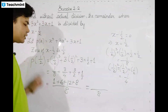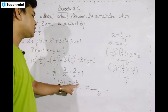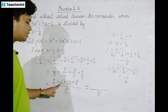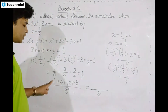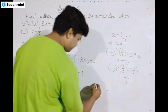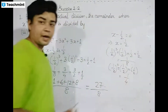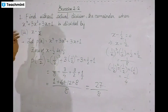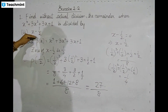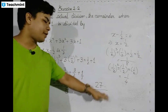So combining the terms: this gives us, adding 12 to 8 which is 20, then 22, then 22 to 6 which is 26, then 26 plus 1 which is 27. So 27 by 8. Therefore p of minus 1 by 2 equals 27 by 8.